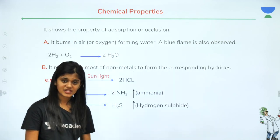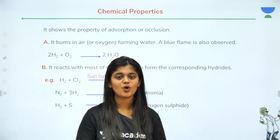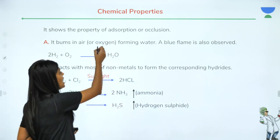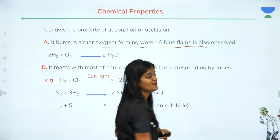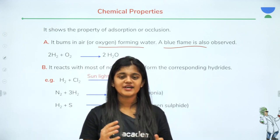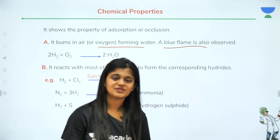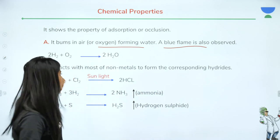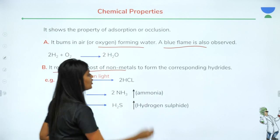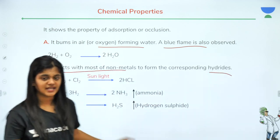Now the chemical properties of hydrogen. First: it burns in air — as mentioned, it is combustible — and forms water. A blue flame is also observed. So remember: it forms water and a blue flame is seen. Next: it reacts with non-metals to form corresponding hydrides.